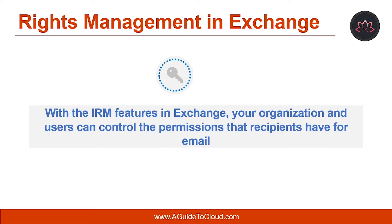IRM in Exchange helps prevent information leakage by offering many features. You can use IRM to prevent an authorized recipient of IRM-protected content from forwarding, modifying, printing, faxing, saving, or cutting and pasting the content. You can protect supported attachment file formats with the same level of protection as the message. And you can prevent IRM-protected content from being copied using the snipping tool in Windows.